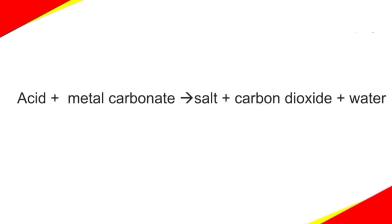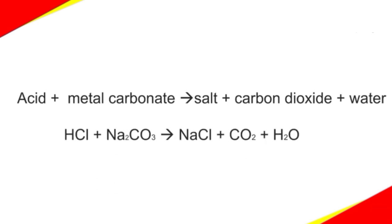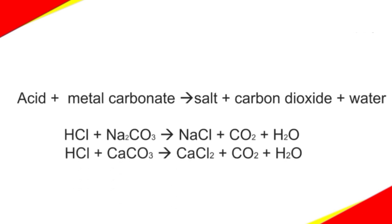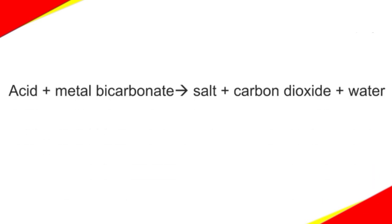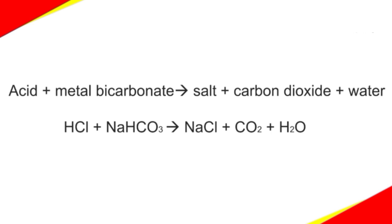Hence, we may conclude that when an acid reacts with a metal carbonate, it gives salt, carbon dioxide and water. HCl when reacted with sodium carbonate Na₂CO₃ gives sodium chloride (a salt) along with carbon dioxide and water. Similarly, in the previous activity, hydrochloric acid and calcium carbonate react to form calcium chloride with liberation of carbon dioxide and water. An acid also reacts with a metal bicarbonate to form salt, carbon dioxide and water. HCl when reacted with sodium bicarbonate NaHCO₃ gives NaCl (a salt) along with carbon dioxide and water.